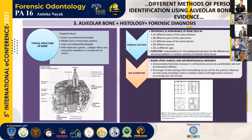The third method is histology and forensic diagnosis. Alveolar bone consists of an outer corticular bone filled with spongy bone inside, with trabeculated bone and Haversian canals. Differences in appearance of bone are seen in different bones of the same skeleton, different parts of the same bone, different areas of the same section, at different species, and at different stages and ages — all of which can be used to identify a person.